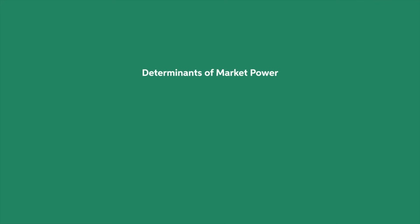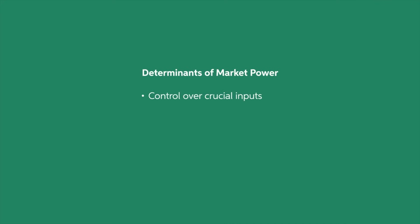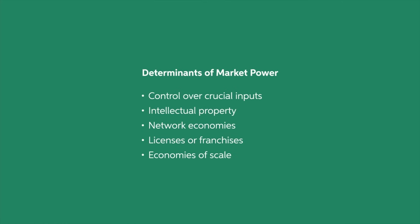The main categories of monopoly power are exclusive control over commercial inputs, intellectual property like patents, network economies, licenses or franchises, and economies of scale.